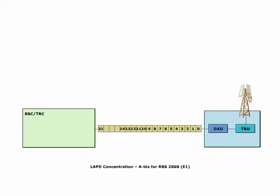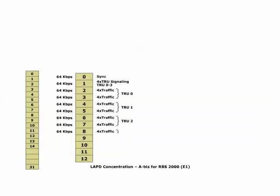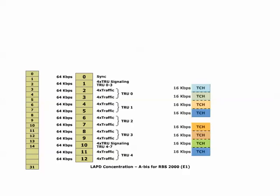LAPD concentration is recommended for all cells, but in particular for those with 3 TRUs or more. With LAPD concentration, each TRU needs two 25 PCM time slots. It is thus possible to fit up to 13 TRUs on one 2 Mbps PCM line, as compared to 10 TRUs without this feature. For cells with 1 to 2 TRUs per cell, LAPD multiplexing provides the most efficient ABIS transmission.